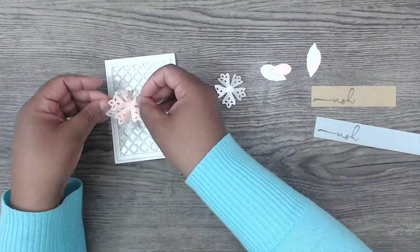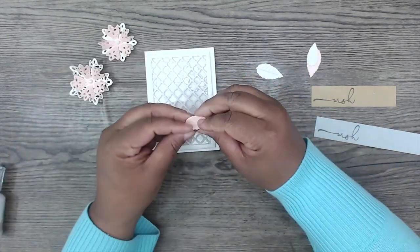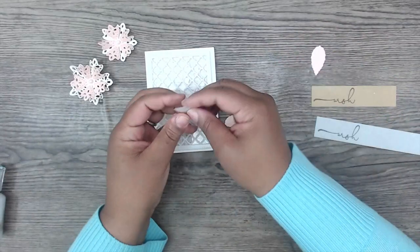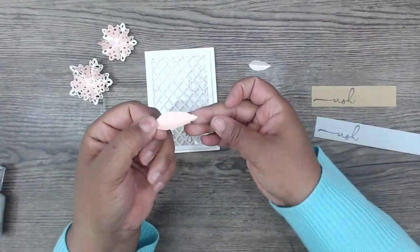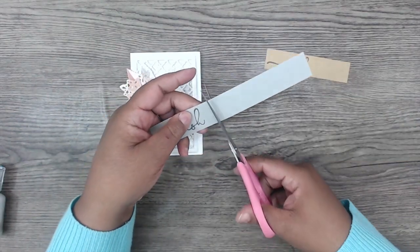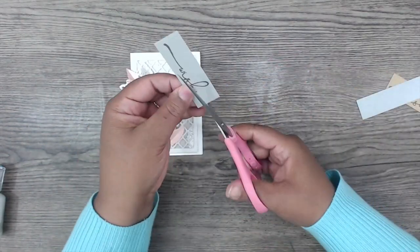I'm just going to layer two flowers together using hot glue. And then I'm going to pinch up the leaves. They already have a nice crease in them. These are from the Cinch and Go 4. And I'm just going to pinch them up.